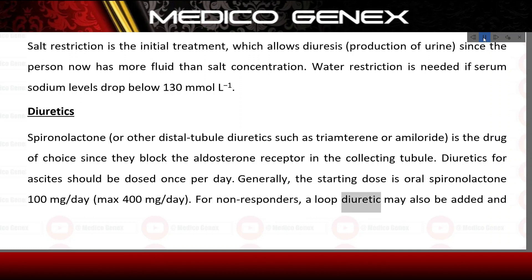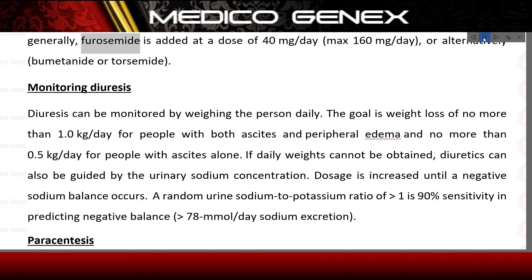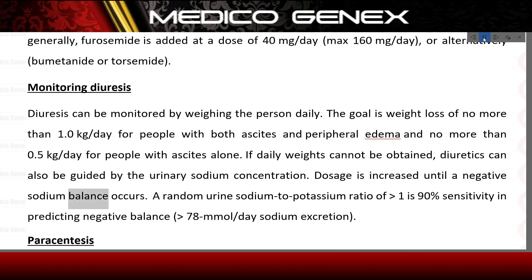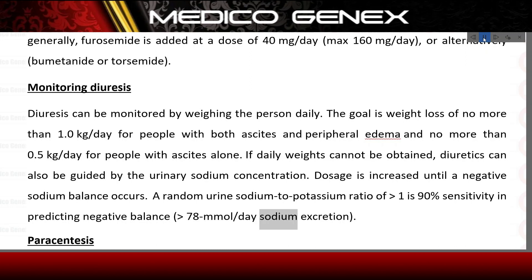For non-responders, a loop diuretic may also be added — generally furosemide at a dose of 40 mg/day, max 160 mg/day, or alternatively bumetanide or torsemide. Monitoring diuresis: diuresis can be monitored by weighing the person daily. The goal is weight loss of no more than 1.0 kg/day for people with both ascites and peripheral edema, and no more than 0.5 kg/day for people with ascites alone. If daily weights cannot be obtained, diuretics can be guided by urinary sodium concentration. A random urine sodium-to-potassium ratio of 1 has 90% sensitivity in predicting negative sodium balance (78 mmol/day sodium excretion).